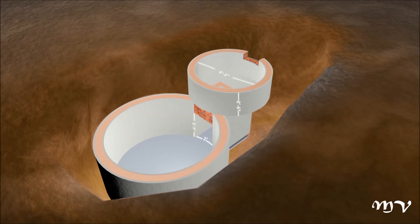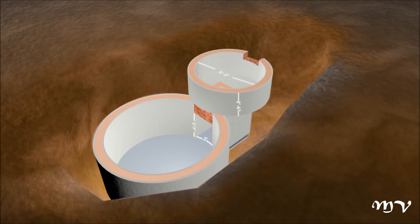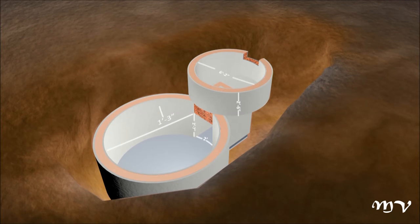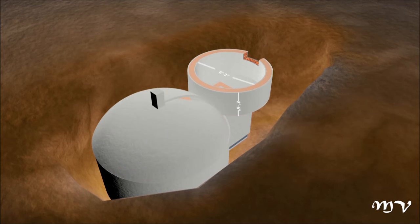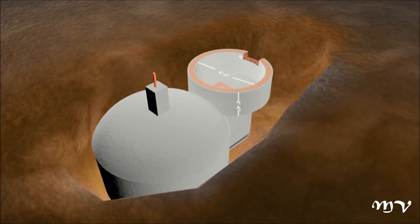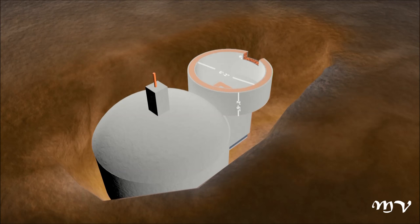For the hydraulic chamber, a circular chamber of height two feet six inches from the top of the gateway, and of diameter six feet two inches, has to be constructed. The next step includes the construction of an arc over the digester chamber, which looks like a dome of one foot three inches height.